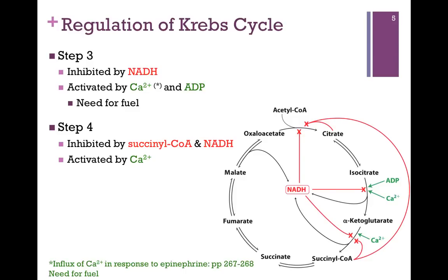We can also activate the pathway by turning on the enzymes that catalyze steps three and four — they're both activated by the influx of calcium. Recall from chapter 10 that calcium builds within the cell in response to epinephrine, as part of the fight-or-flight response. As calcium builds, it stimulates the production of more reduced cofactors in the citric acid cycle and gives us more ATP energy as fuel. We can also activate step three by ADP — that's a measure of the energy needs of the cell. If ADP concentration is high, then ATP concentration is low, and we need to turn on the pathway.